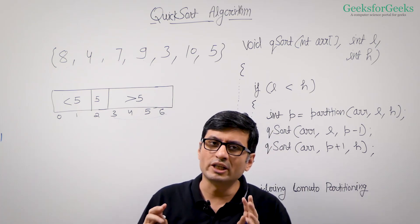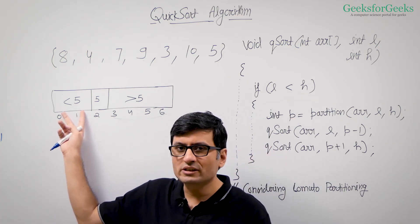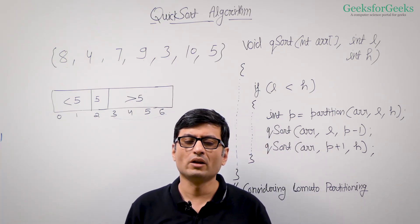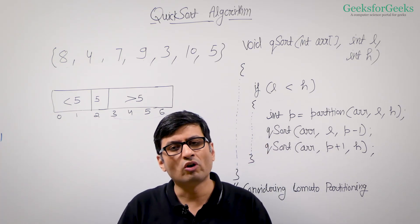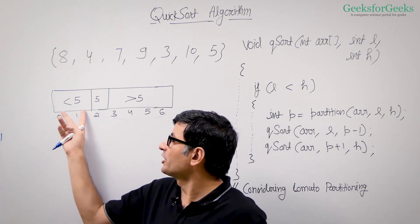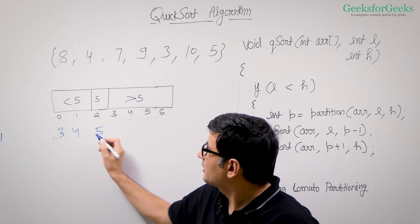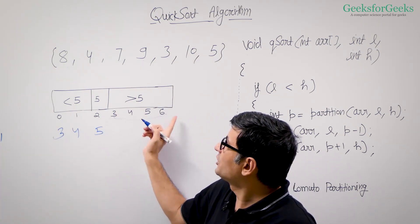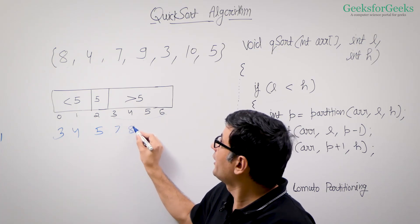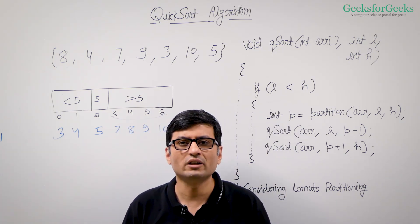Now if you individually sort these two elements and individually sort these four elements, you do not need to do anything more. Once you have sorted these two, you will get 3 and 4 here. Your 5 is already fixed. And once you sort these four, you will have 7, 8, 9, 10 here. Your whole array is sorted.